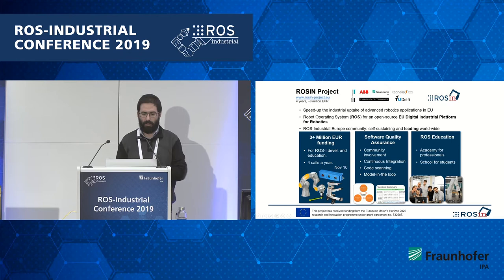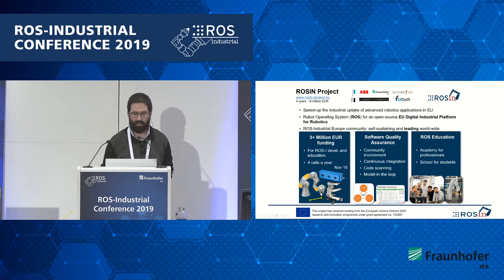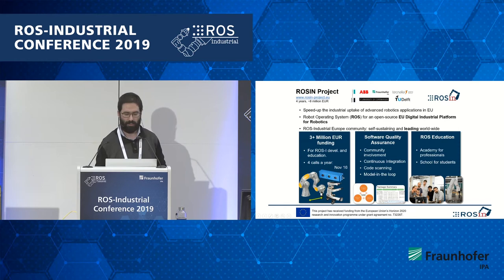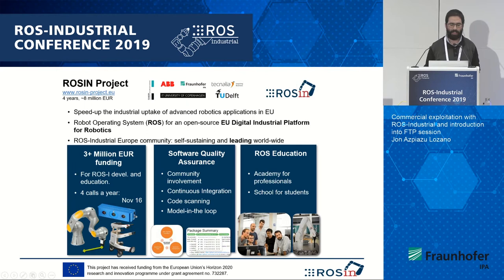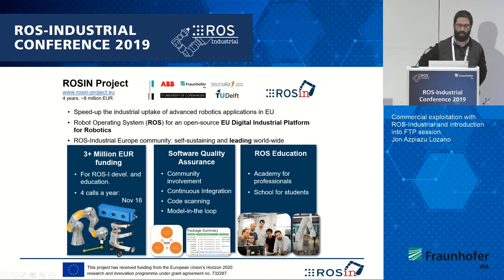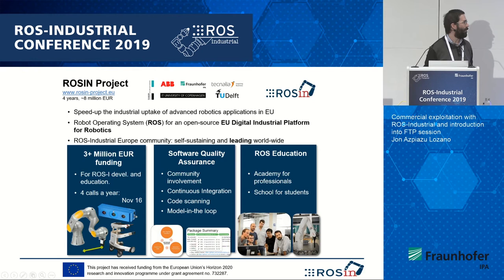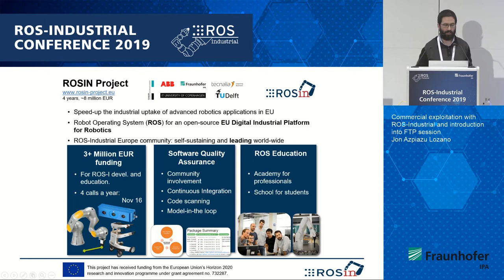The ROSIN project was based on three main actuation pillars. On the right side, you see the education pillar. We had different activities for educating our European friends on ROS — the ROSIN industrial academies, short courses for professionals, and ROS schools for students. Then we had another pillar about software quality assurance, to increase the quality of ROS software and generate tools for development. Finally, the pillar I'm going to talk about is the FTPs.